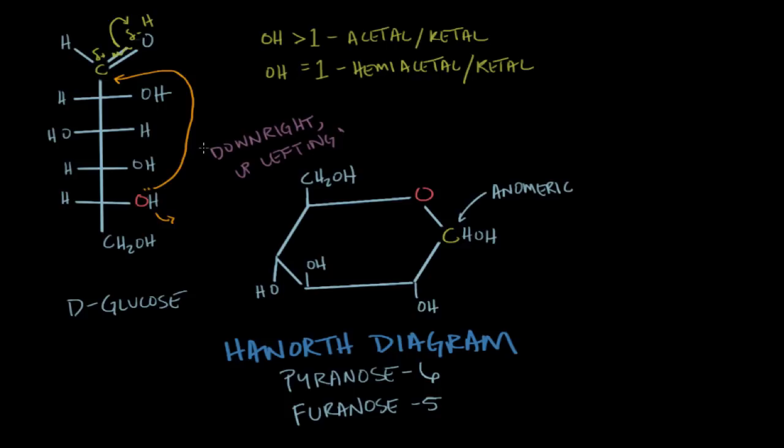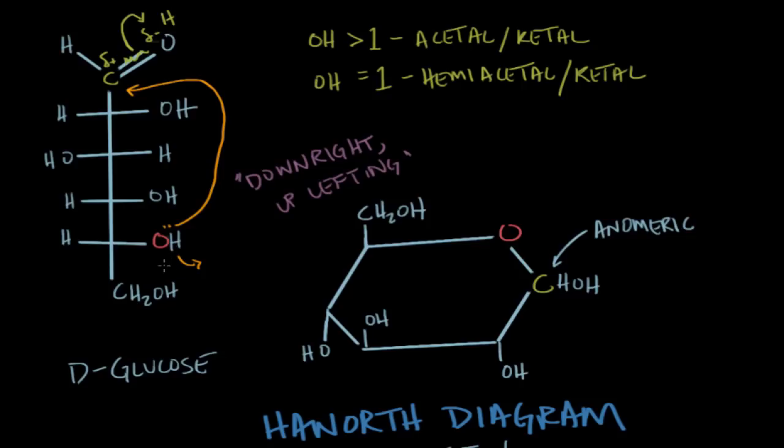But downright uplifting because as I fill in the substituents, those on the right side of the Fischer diagram will point down, and those on the left side of the Fischer diagram are going to point up. So we can actually see that. That one's up. And we'll make sure that this numbering is right. This one's up as well. And maybe we'll start numbering with 1, 2, 3, 4, 5, 6. And we can do that over here. This would be 1, 2, 3, 4, 5, 6. So our three carbon in the Haworth diagram is pointed up, and our three carbon on the Fischer diagram has its substituent on the left. So downright uplifting.